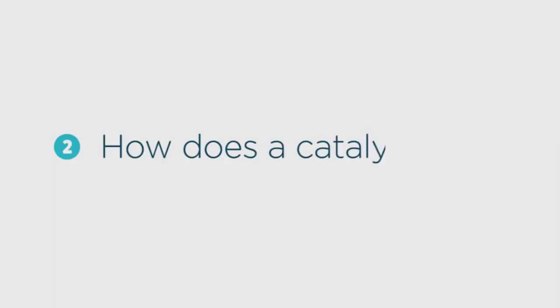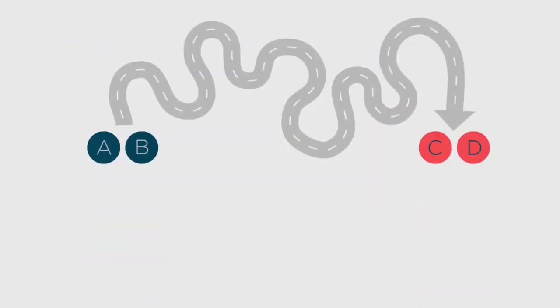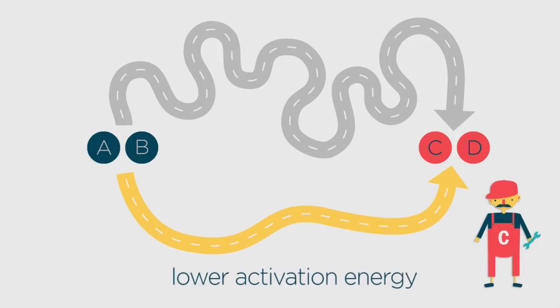So how does a catalyst work? A catalyst works by providing an alternative pathway for the reaction to occur. This alternative pathway has a lower activation energy than the pathway without the catalyst.